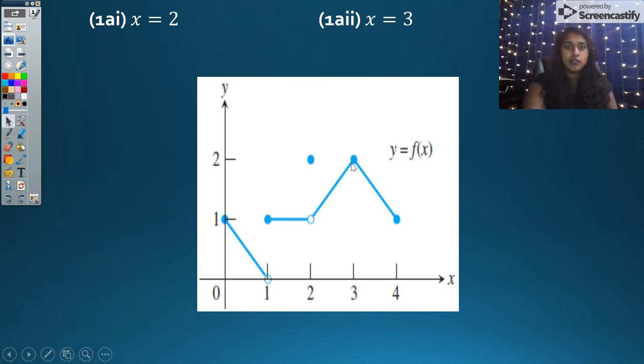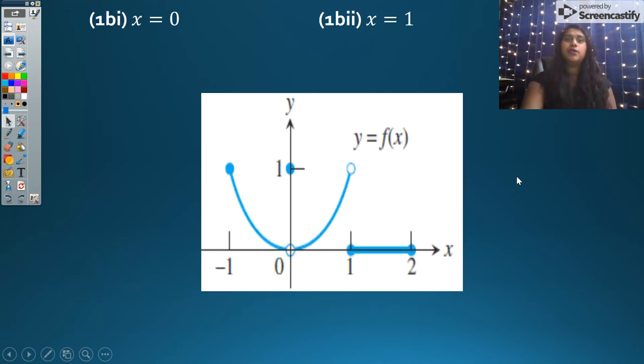What about at x equals 3? If I look along, I can draw my pencil. It is continuous. I've got another example. Again, pause, take a second to look at x equals 0 and at x equals 1. Our answers, at x equals 0, I have a removable discontinuity. And at x equals 1, this is a true jump discontinuity. So we identified a couple of our discontinuities.